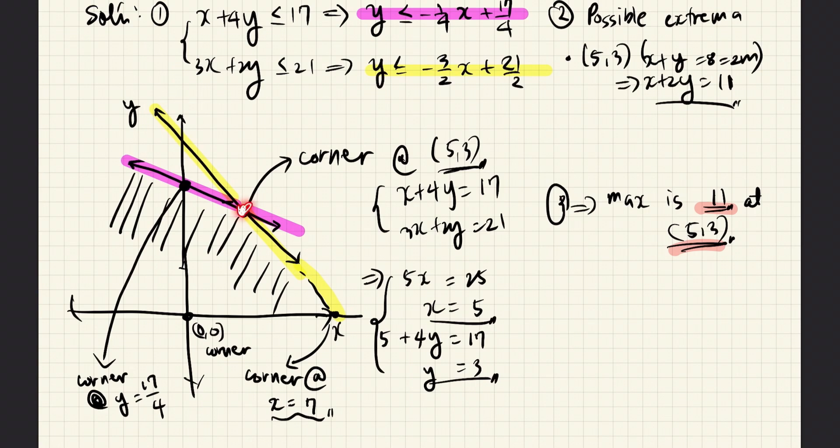And so we are interested in finding this point. To do that we solve the equations of these two lines. The equation of the pink line is simply X plus 4Y equals 17, and that is what we have here. Likewise the equation of the yellow line is just this inequality with the inequality sign replaced with an equal sign. To solve this I multiply the second equation by 2 and the first equation by negative 1, and then add the resulting equations.